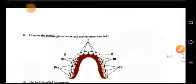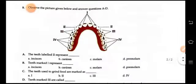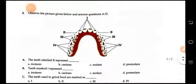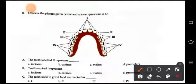And next is observe the picture given below and answer questions A and D. Children, you have to label these points. Okay, these numbers 1, 2, 3 and 4.